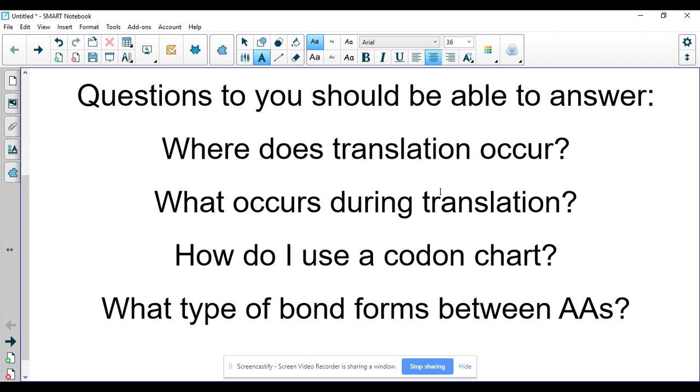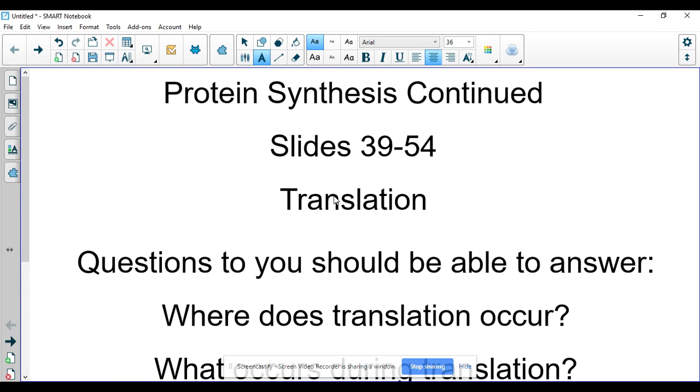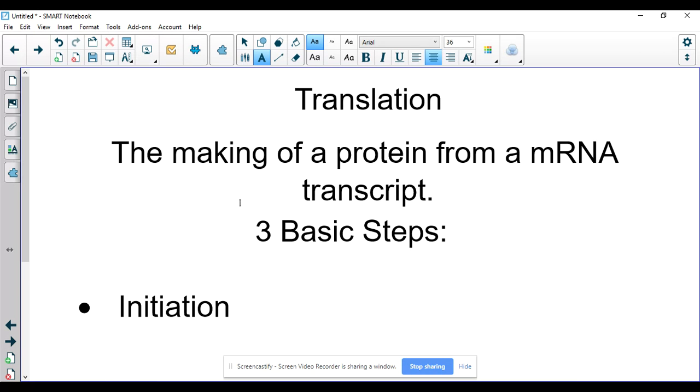You can take notes as you go through this. This is going to be a simplified version of what you have on your notes. I will say the notes have a great picture going through the different steps of translation. So we've got translation, making the protein from an mRNA transcript. So it's that basic part of central dogma.